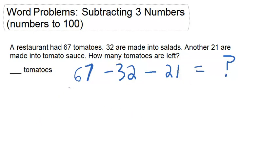So let's begin by subtracting 32 from 67. If we stack these numbers vertically, we figure out that 7 minus 2 is 5, and 6 minus 3 is 3. So there's 35 left after 32 are made into salads.